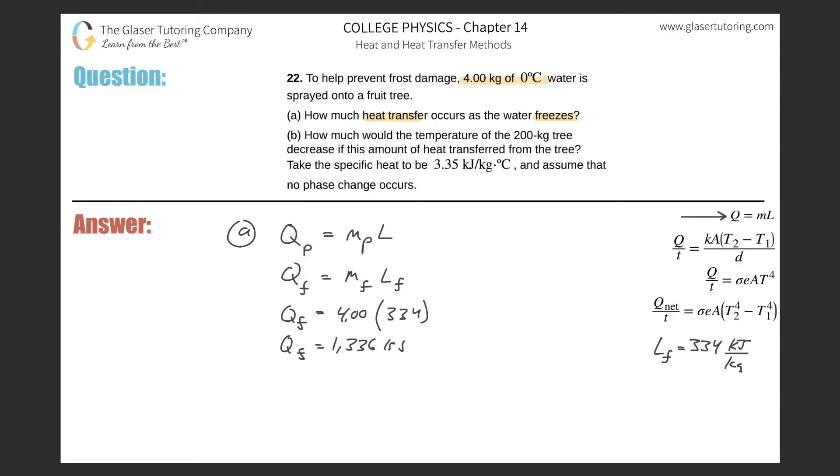1,336 kilojoules. All right, so that's an answer. If you wanted that in joules, just simply take that and multiply it by 1,000, and that would be equivalent to 1,336,000 joules. It doesn't matter, they're all the same. Okay, letter B.